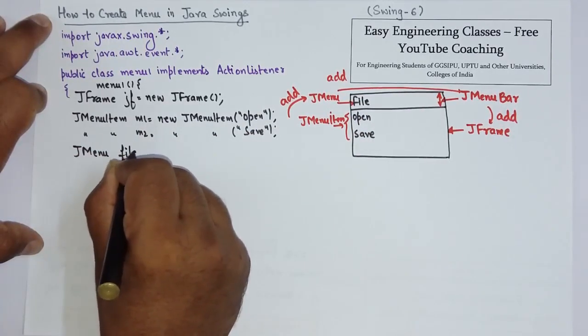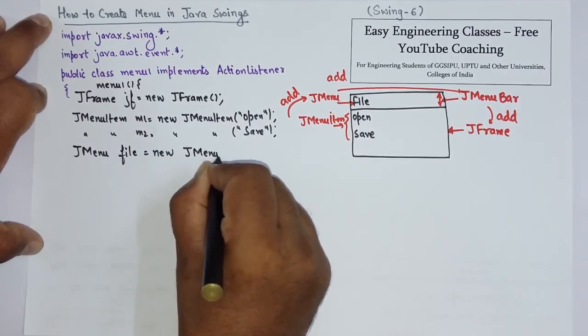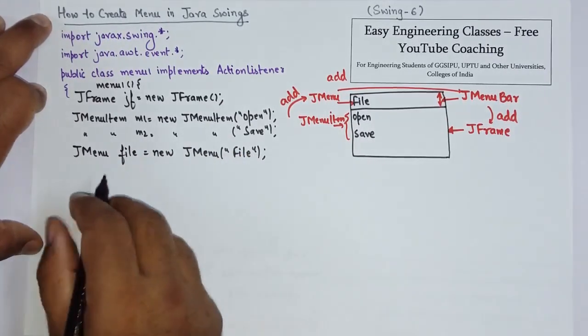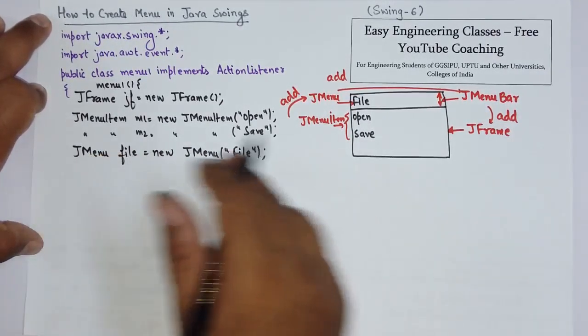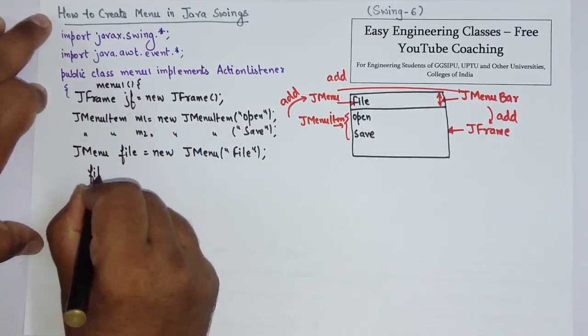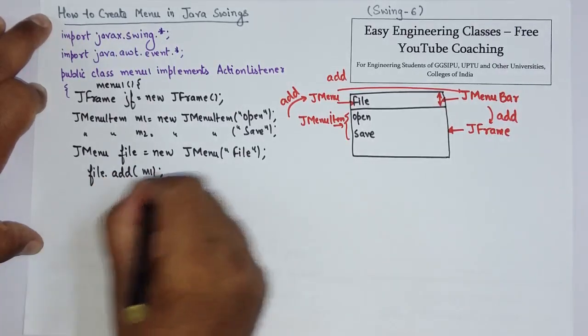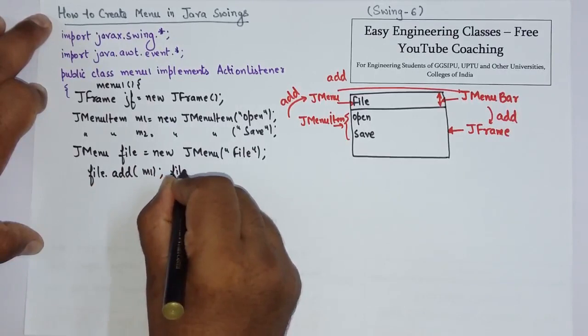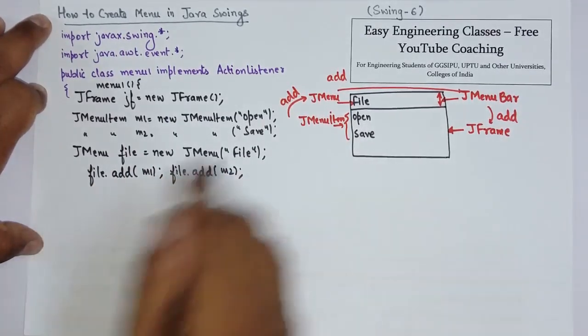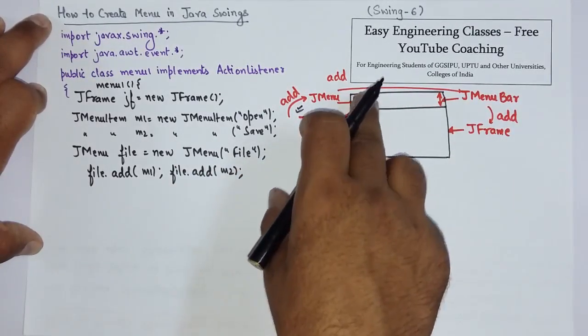JMenu file equals new JMenu file. So the menu is also created file. Now I have to add these menu items in the file. So I am going to write file.add m1 and file.add m2. So this part is completed. Creation of menu items and menu.